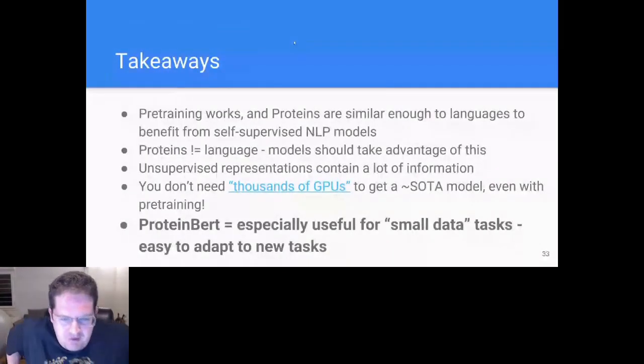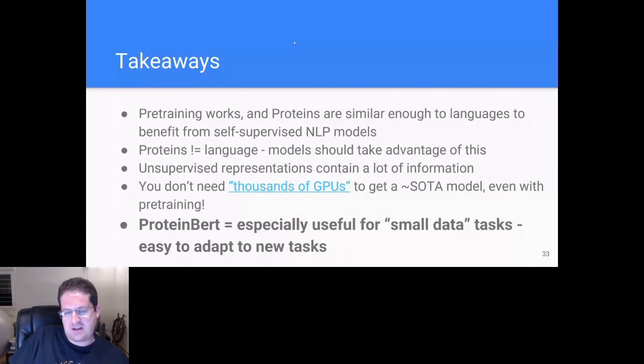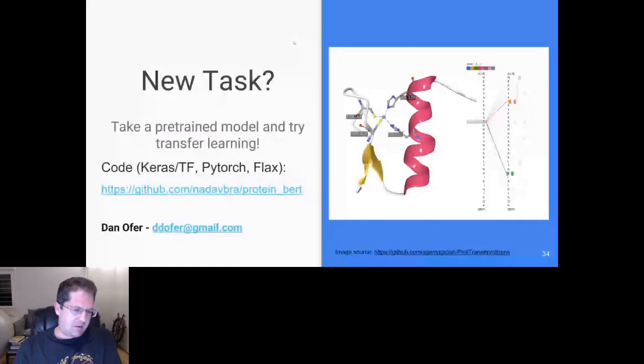So general takeaway, I would say is that pre-training and self-supervised learning works and proteins can benefit from the approaches in NLP, but they're not the same as natural language. And we should take advantage of this. There's enough stuff in proteins if it's worth the effort. And you can also get a very, very strong model, even if you don't have thousands of GPUs in the supercomputer, even with some very modest hardware, like one small GPU is trivial compared to just running MSAs. And also these approaches are very useful for small data tasks. And unsupervised adaptations include a lot of stuff. We released our models and also there's all of the data, including all of the monstrous data managing code required to parse UniProt.